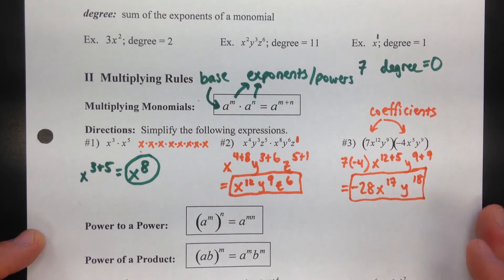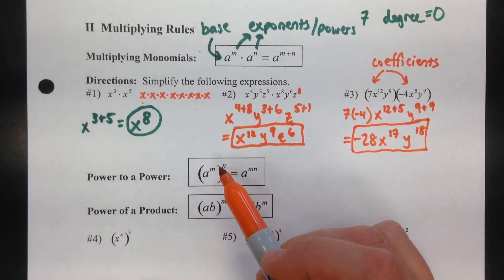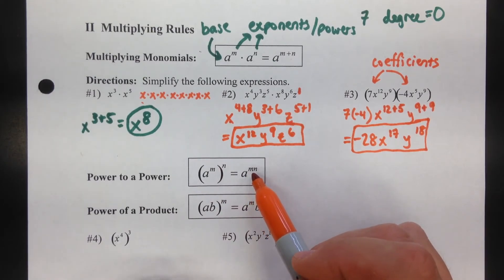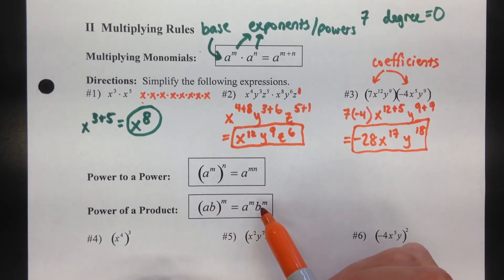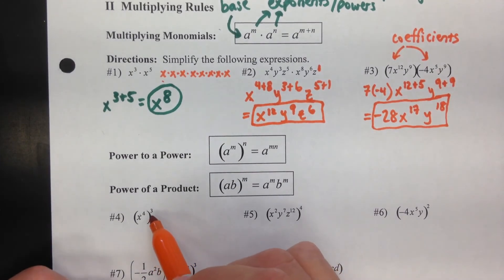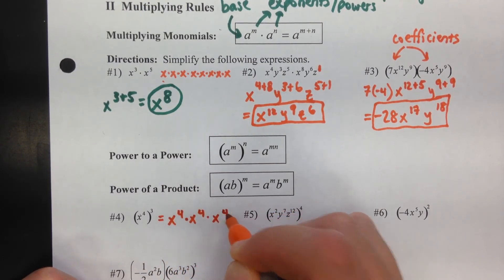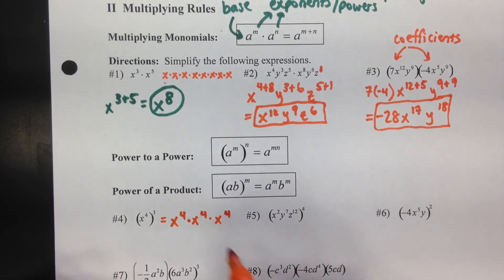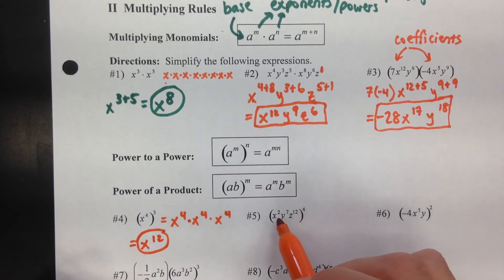The next rule is power to a power: if you take a to the m and raise it to the nth power, you multiply the exponents. For example 4: x to the fourth raised to the third — you can think of it as x to the fourth times itself three times, add those and get x to the twelfth. The shortcut is to just multiply the exponents: 4 times 3 equals x to the twelfth.